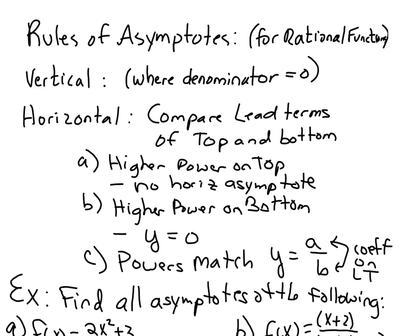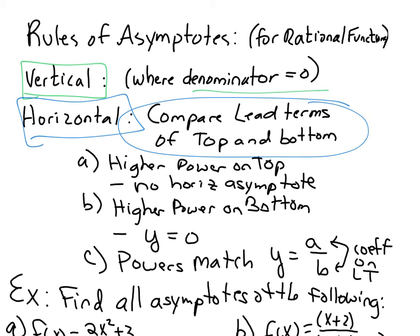Finally, let's remind you of our rules of asymptotes when we had worked on rational functions. Remember, your vertical asymptotes are where your denominator is equal to zero. Your horizontal asymptotes, you're going to compare the lead terms of the top or the bottom. If the top power is higher than the bottom power, there are no horizontal asymptotes. If the higher power is on the bottom, then it's just Y equals zero. If the powers match on top to bottom, then just use the coefficients on the lead terms and that will give you your asymptote. So, now let's go ahead and do some examples.